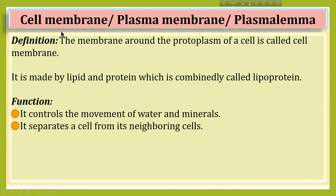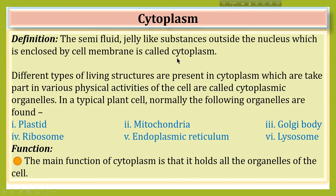Cell membrane, also called plasma membrane or plasmalemma. The membrane around the protoplasm of a cell is called cell membrane. It is made by lipid and protein, which is commonly called lipoprotein. Its functions are: it controls the movement of water and minerals, and it separates a cell from its neighboring cells.